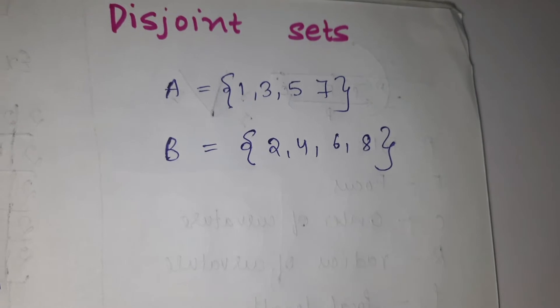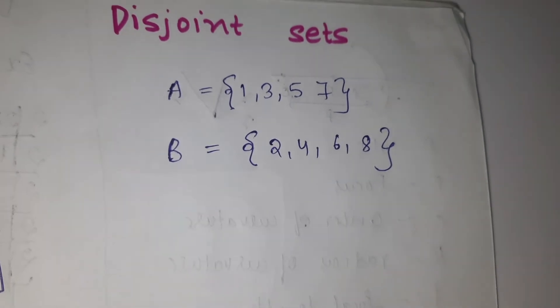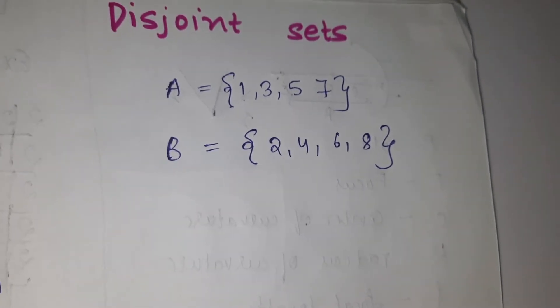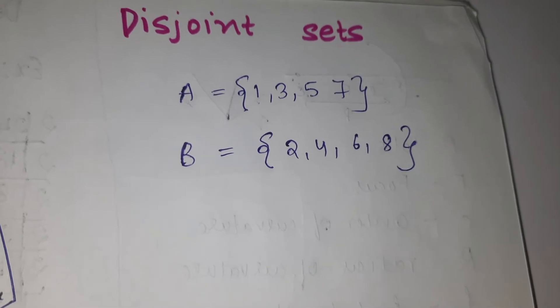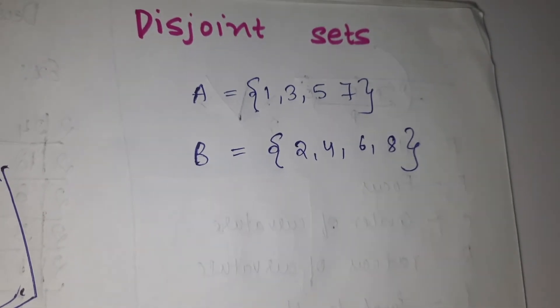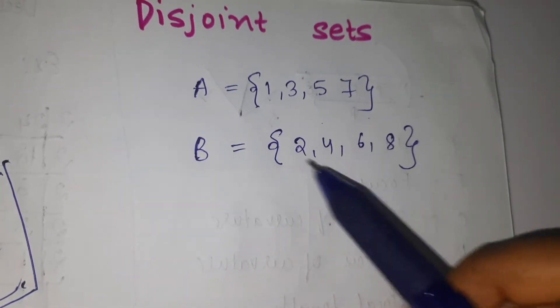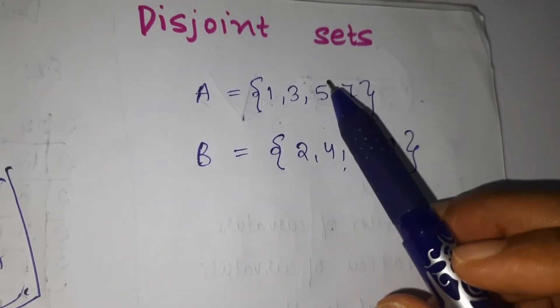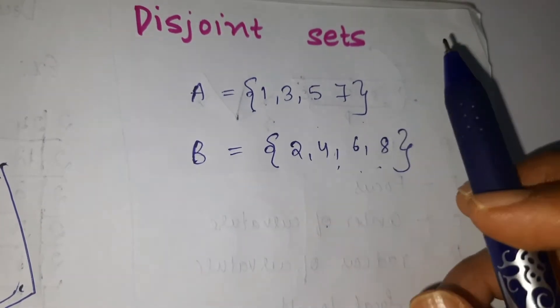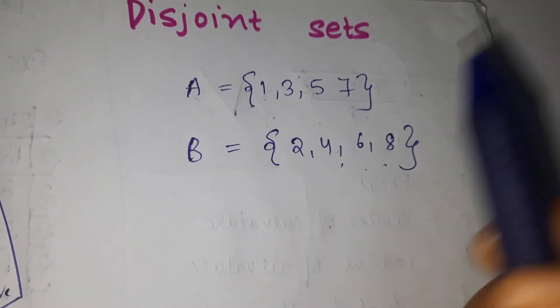Hello guys, welcome back. Today we are going to discuss another important topic: disjoint sets. Let's say A = {1, 3, 5, 7} and B = {2, 4, 6, 8}. Disjoint means these both have nothing in common.